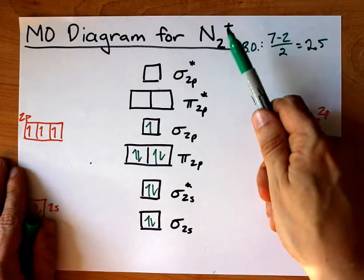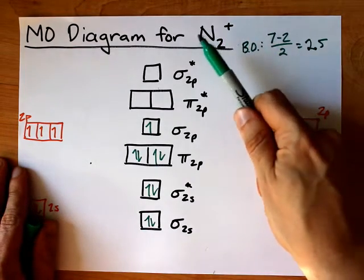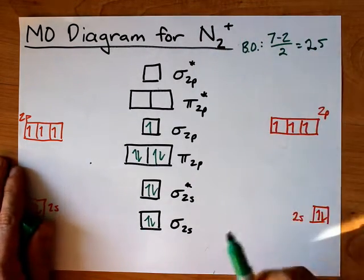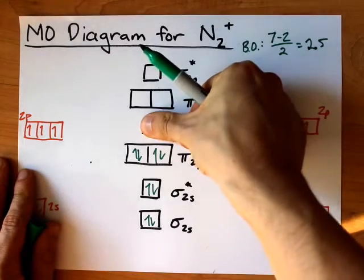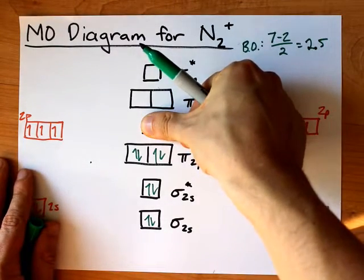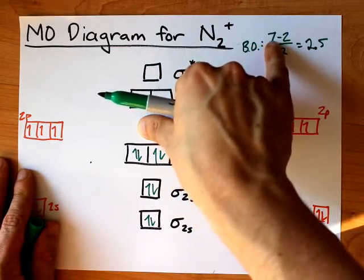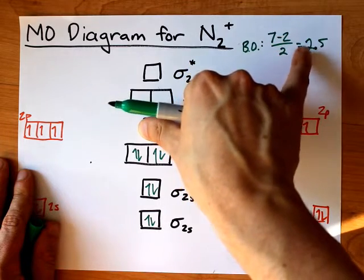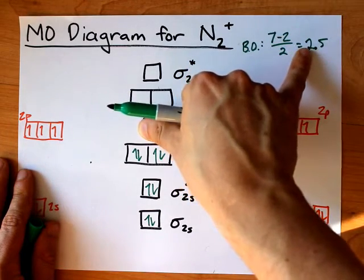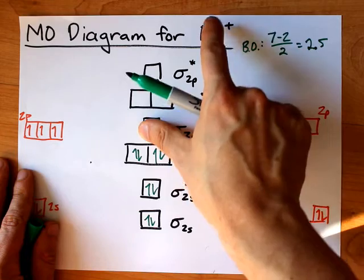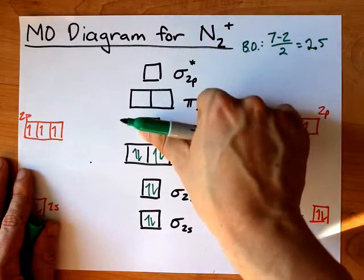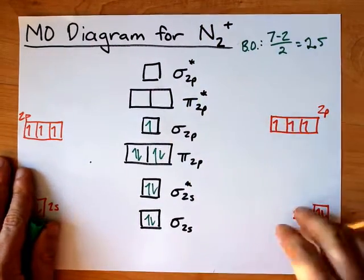If we had removed a second electron from here, make it N2 with a 2 plus charge, that electron wouldn't have been here. And instead, we would have had a bond order of 6 minus 2 over 2, which is positive 2, which is a whole number. And thus, N2 with a 2 plus charge is, and should be, a stable species.